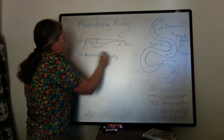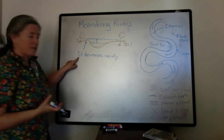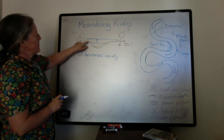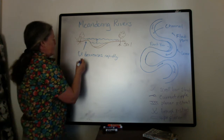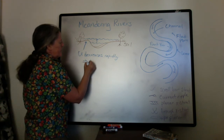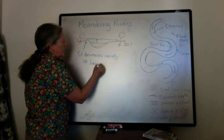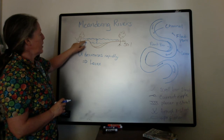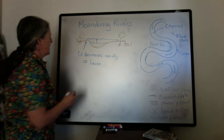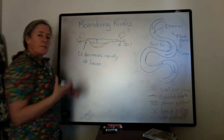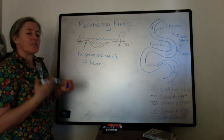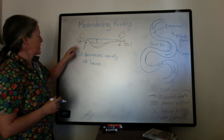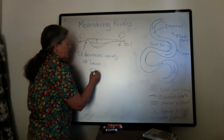When the flow speed decreases, that causes deposition, and that deposition creates a natural levee on the side of the river — a high deposit of sediment just outside the river channel. Because the deposition rate is so fast, there is not very much erosion on the upstream side of the bedforms, and so you often get climbing ripples.